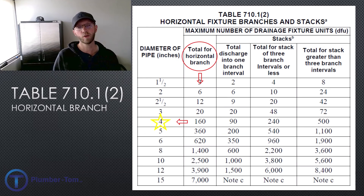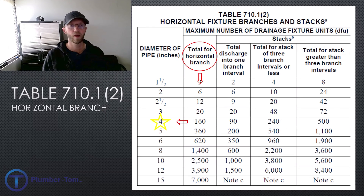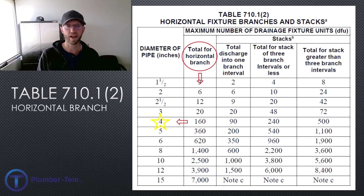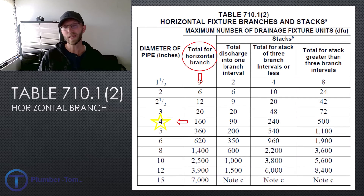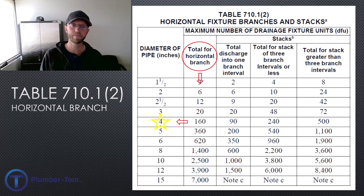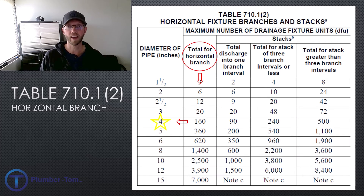We take that 22.5 to the table and look down the column for a horizontal branch. It's more than three, more than six, more than twelve, and more than twenty — so that bumps us to the next line. The result is four-inch pipe for our horizontal branch.